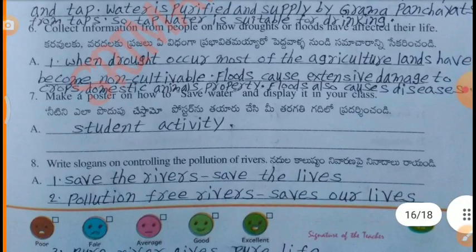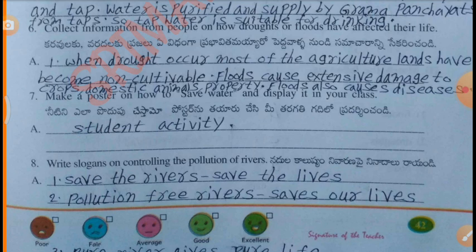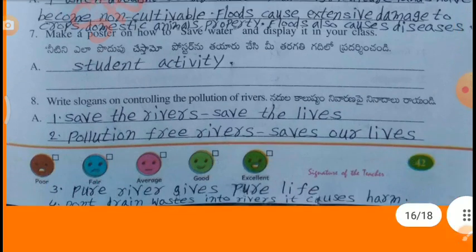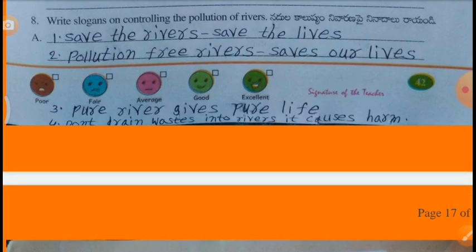Collect information from people on how droughts and floods have affected their life. When drought occurs, most agricultural lands become non-cultivable. Floods cause extensive damage to crops, domestic animals and property. Floods also cause diseases. Make a poster on how to save water and display it in your class — this is a student activity. Write slogans on controlling the pollution of rivers: Save the rivers, save the lives. Pollution-free rivers, save our lives. Pure river gives pure life. Don't drain wastages into rivers, it causes harm.